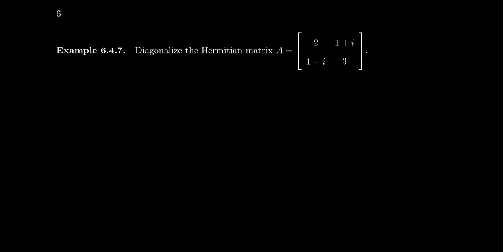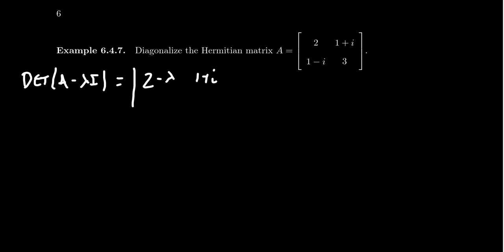By the spectral theorem of Hermitian matrices, we can anticipate that the eigenvalues are going to be real. The characteristic polynomial of this matrix is the determinant of A minus λI. We treat λ as a variable, and so we're taking the determinant: (2−λ), (1+i), (1−i), and (3−λ).